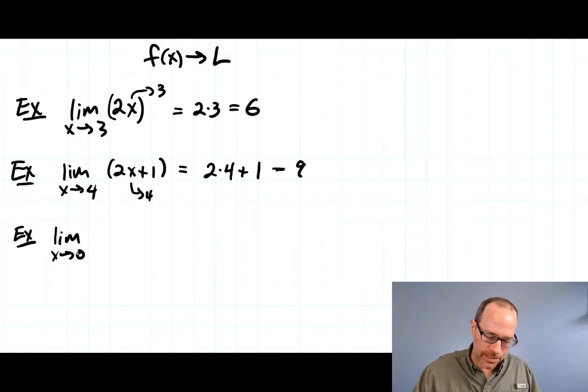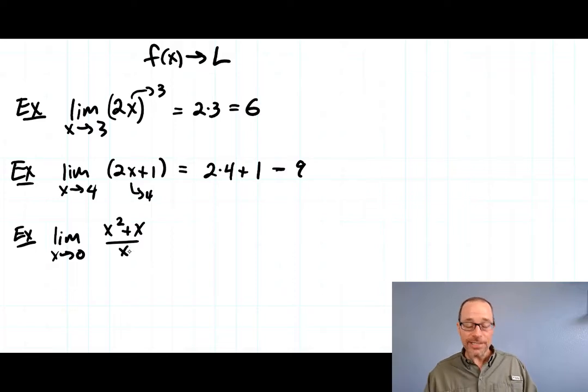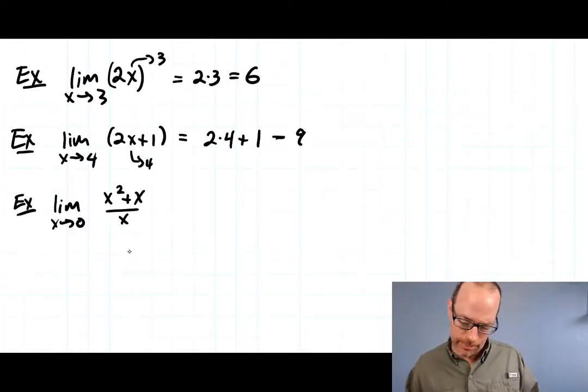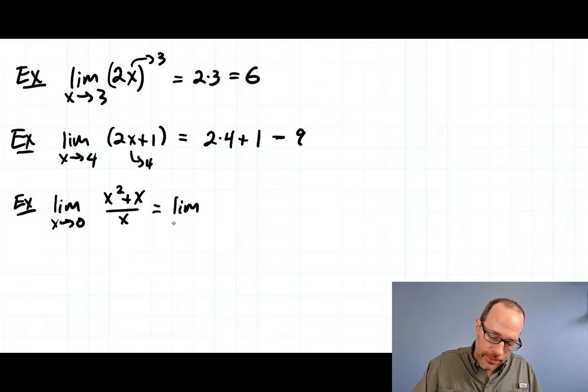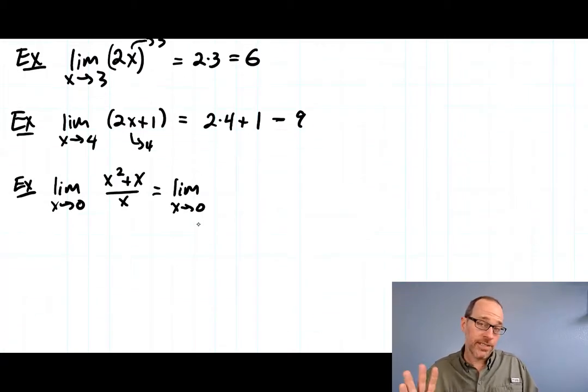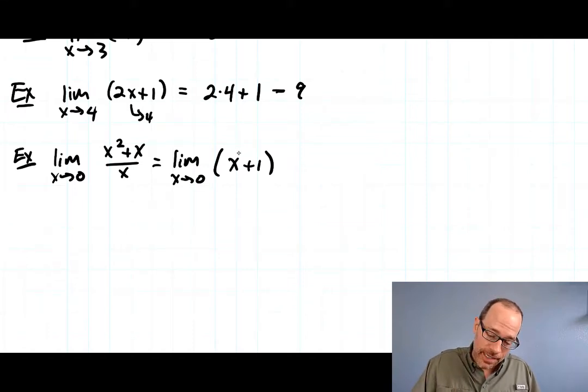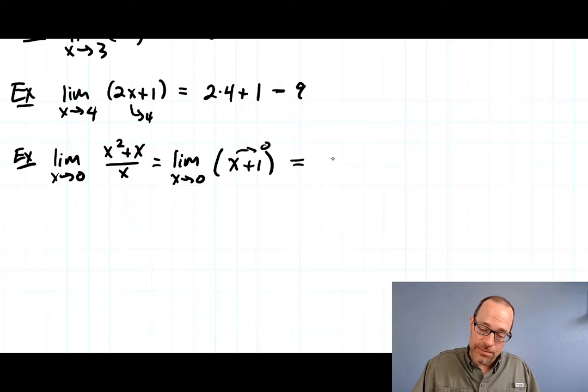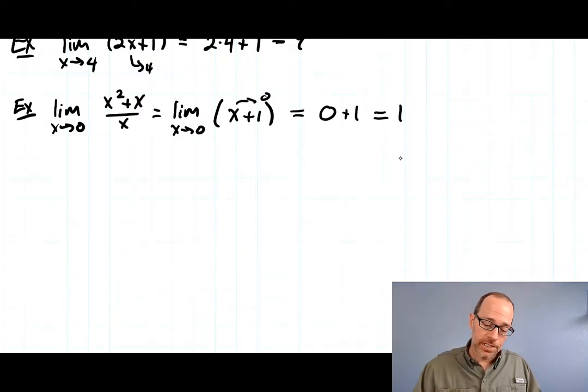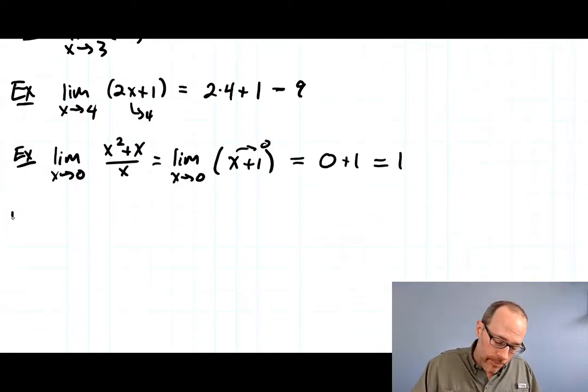Let's look at the limit as x goes to 0 of (x² + x)/x. Here, I can't just plug in 0 because I'd have division by 0, which is undefined. So we need another idea. In this case, simplify: divide both terms in the numerator by x to get x + 1. Now as x goes to 0, x + 1 is getting closer to 0 + 1. So the answer is 1. Sometimes simplifying lets you see what's going on.